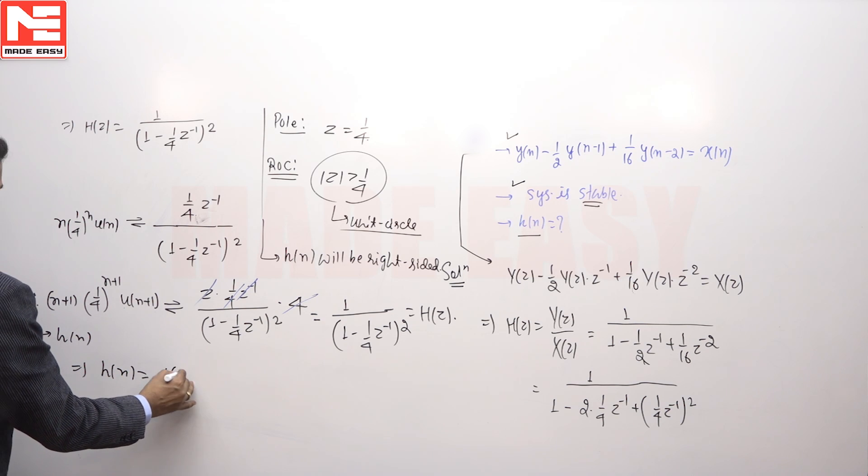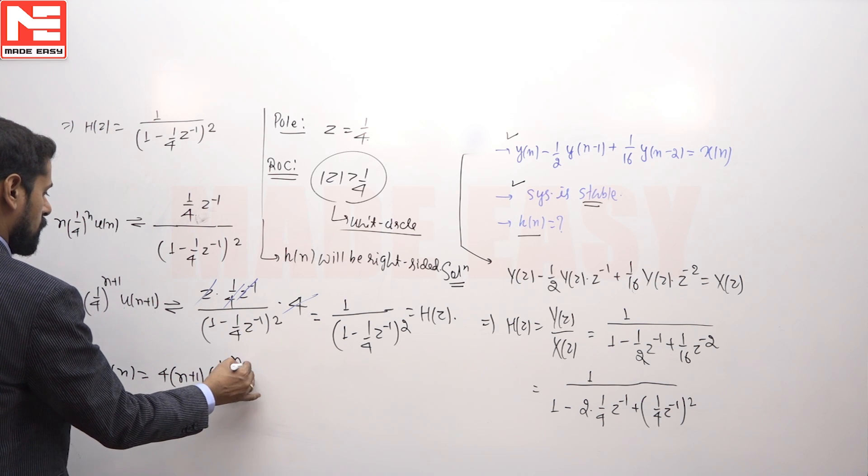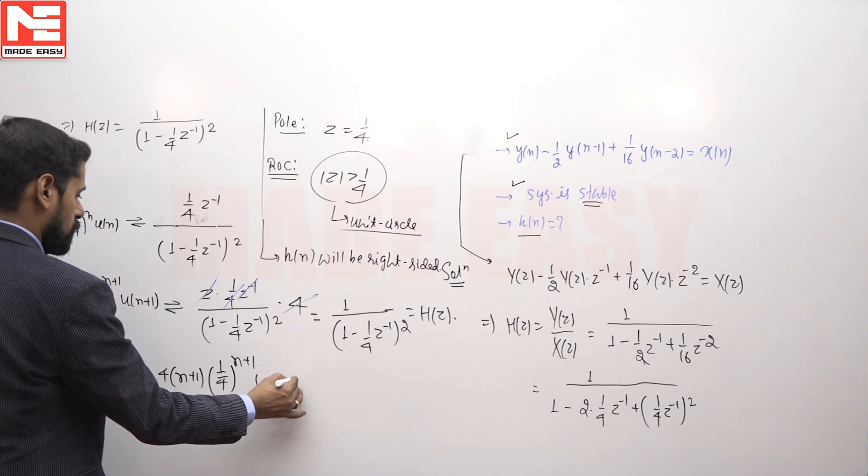h(n) will be equal to 4 times (n plus 1) times (1/4) to the power (n plus 1) times u(n plus 1).